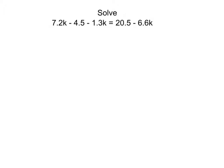The first thing we'll do is combine our like terms on the left-hand side. We have 7.2k minus 1.3k, which gives us 5.9k minus 4.5 equals 20.5 minus 6.6k.